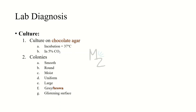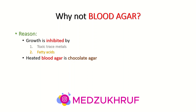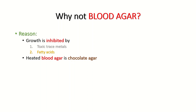Neisseria meningitidis is cultured on chocolate agar — not blood agar — incubated at 37°C in 5% carbon dioxide. Colonies formed are smooth, round, moist, uniform, and large; gray or brown in color with a glistening surface. The reason chocolate agar is used instead of blood agar is that growth of Neisseria meningitidis is inhibited by certain toxic trace metals and fatty acids present in blood agar. When blood agar is heated, these toxic substances are inactivated, allowing bacterial growth. After heating, blood agar becomes chocolate agar.